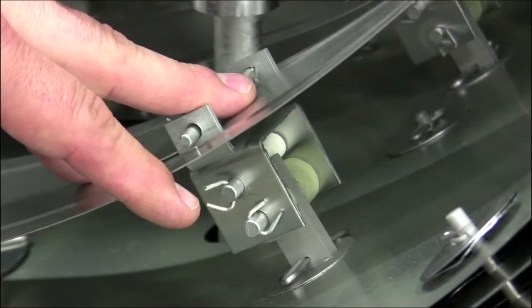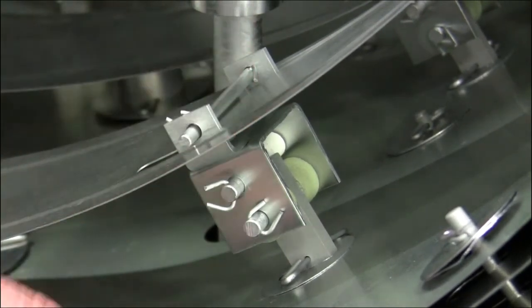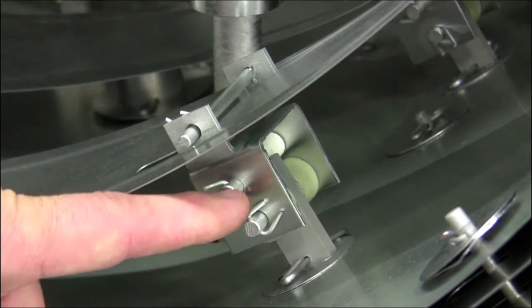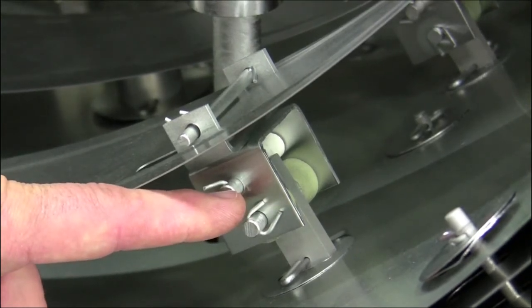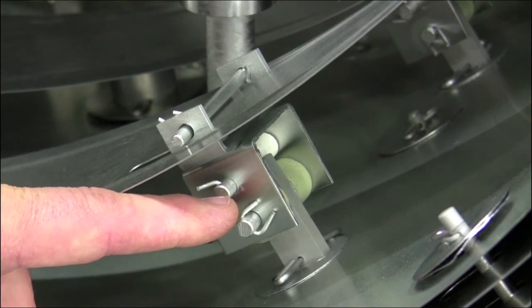When the hot zone is first installed and relatively new, the reading or resistance drop between the heating elements and ground should be nothing. As the ceramics become contaminated with process materials, it becomes necessary to keep a watchful eye on them.